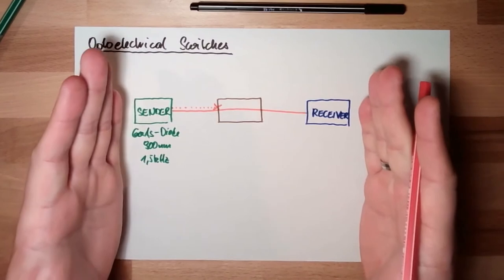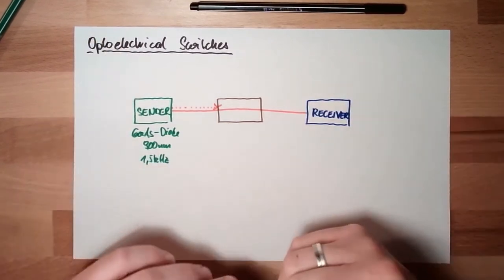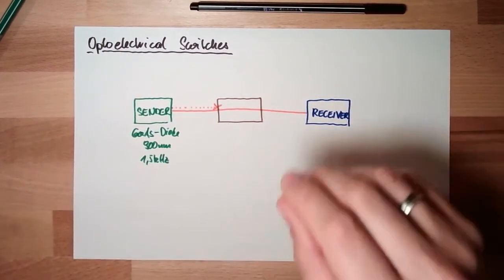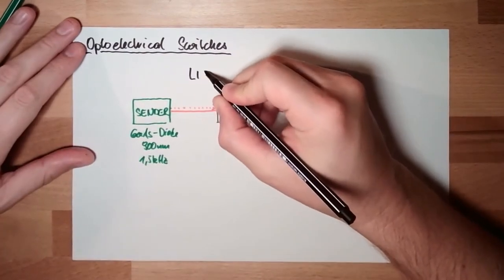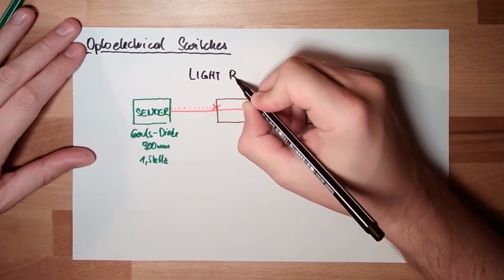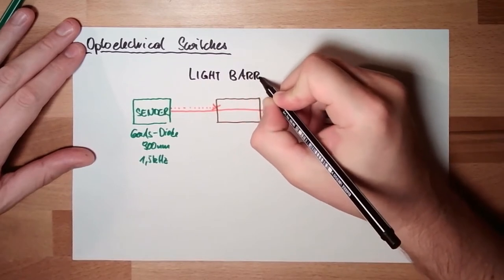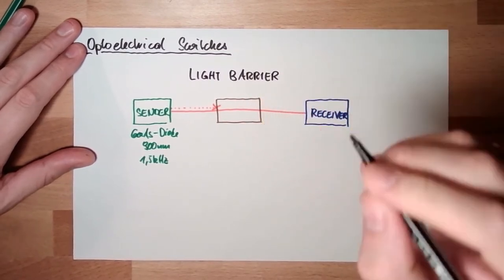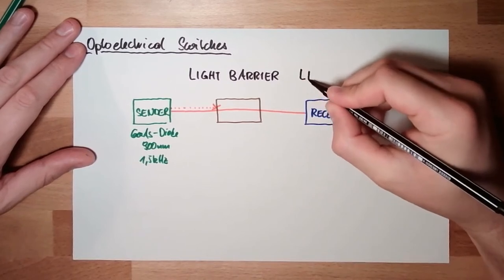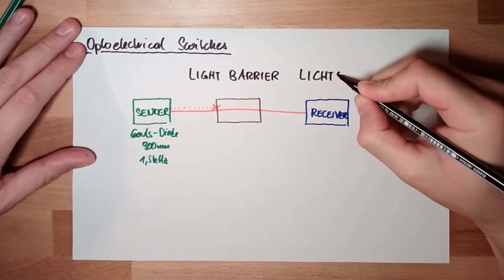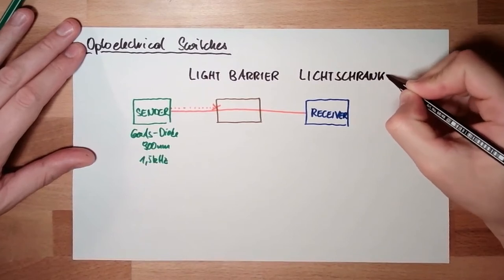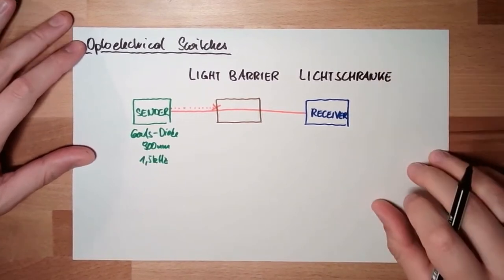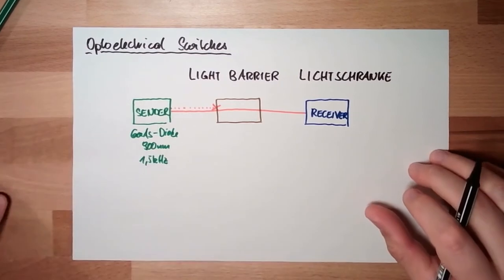If this is how it looks like, that indeed is called a light barrier. Lichtschranke in German. Light barrier in English.